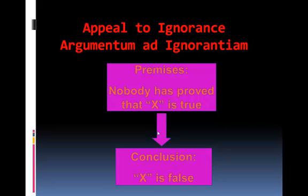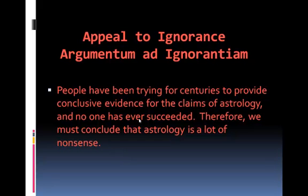The appeal to ignorance, or argumentum ad ignorantiam, is when we have a set of premises in which there is a claim that nobody has proven anything at all, and yet the conclusion claims that either something is true or something is false. For example: people have been trying for centuries to provide conclusive evidence for the claims of astrology, and no one has ever succeeded. Therefore, we must conclude that astrology is a lot of nonsense.